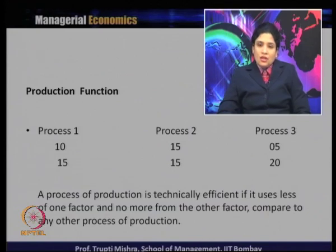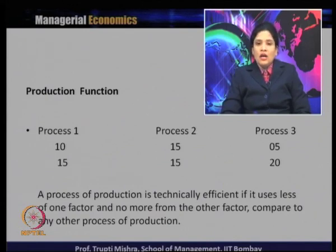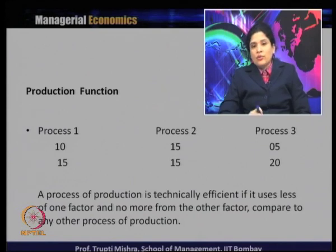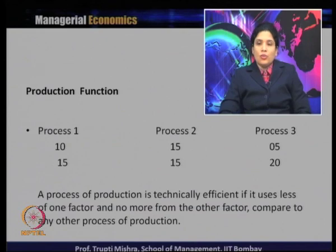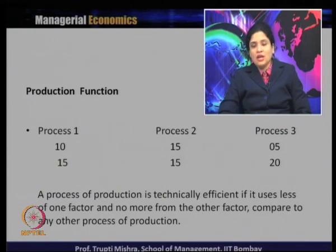Among these three processes, Process 3 is ruled out because even though it uses less capital, it uses more labour. Between Process 1 and Process 2, even though they use the same amount of labour, Process 1 uses less capital — so Process 1 is more technically efficient than Process 2. Overall, among all three processes nothing clearly emerges as technically efficient since using less of one always means more of the other; however, Process 1 is at least more technically efficient than Process 2.